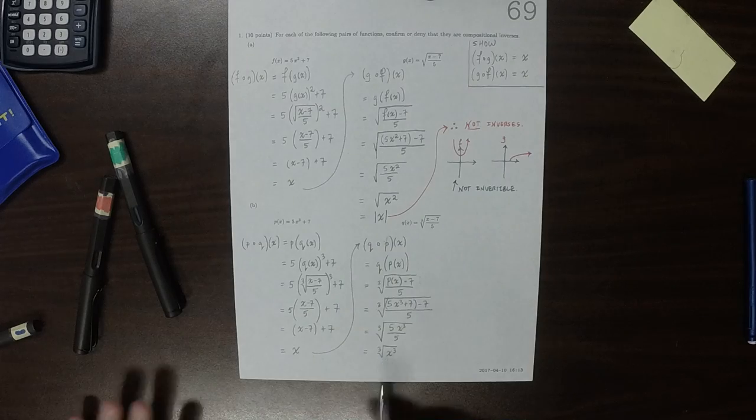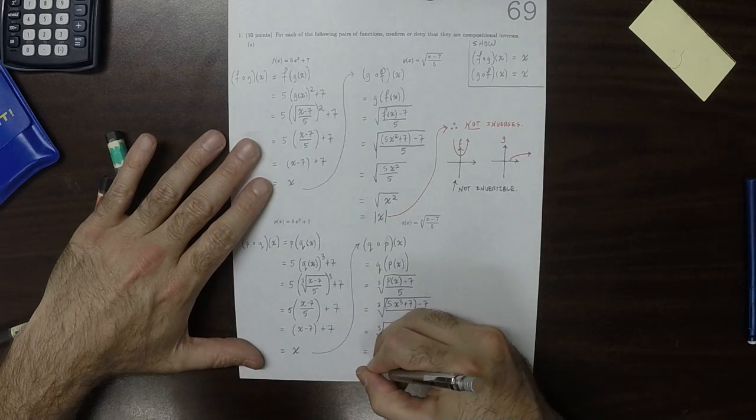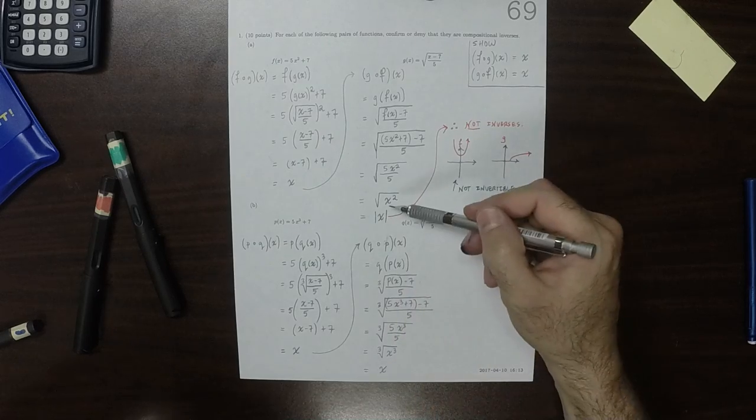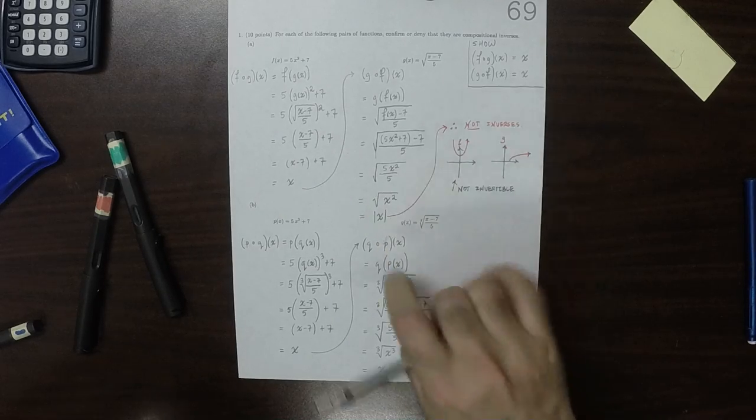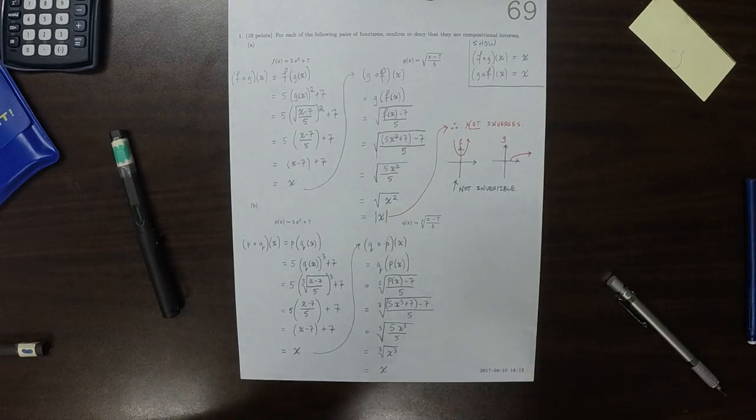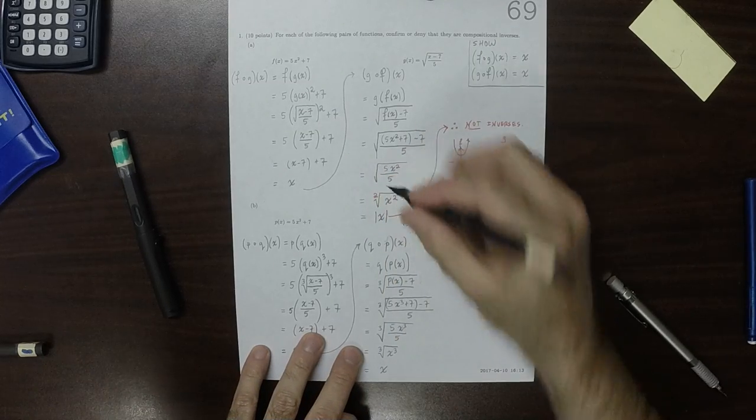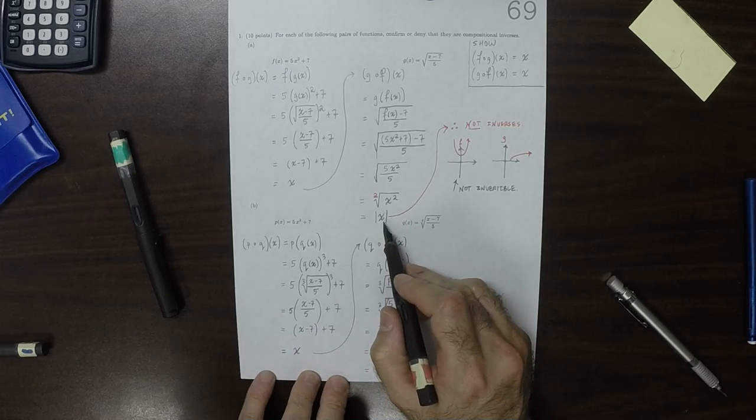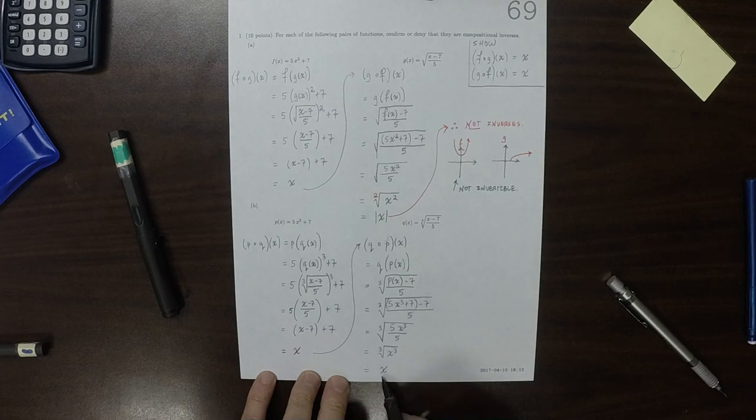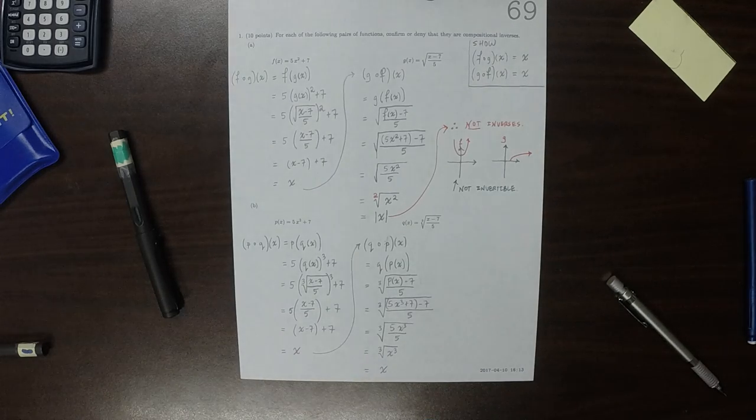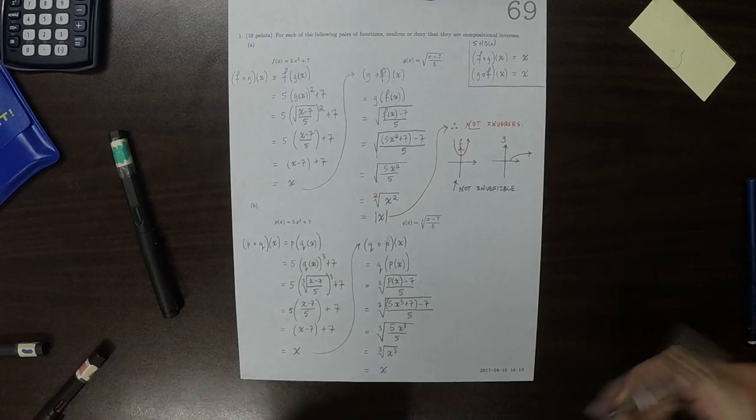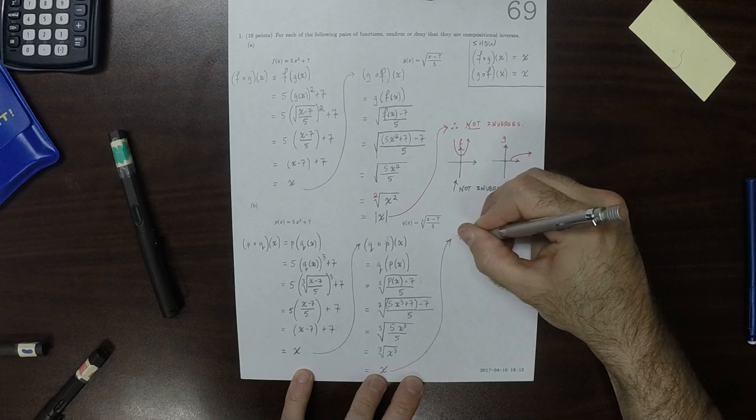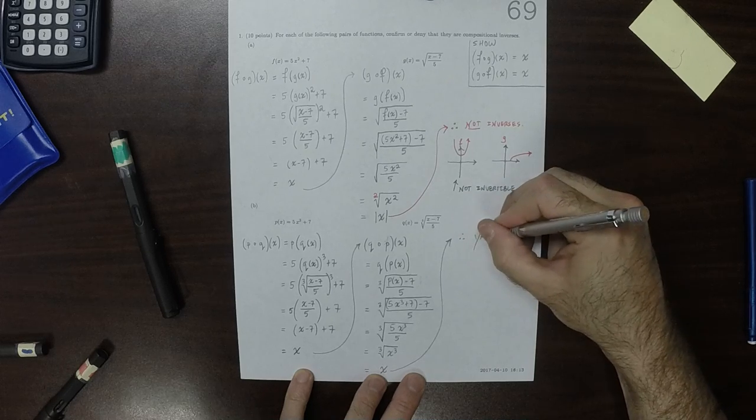And now the cube and the cube root do cancel. When it's odd like 3, it gives you just x with no absolute value, whereas in the even case it gave absolute value. So as a result, the answer is therefore yes, they are inverses.